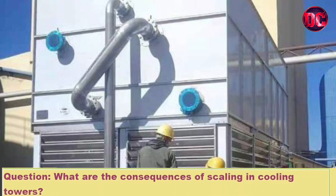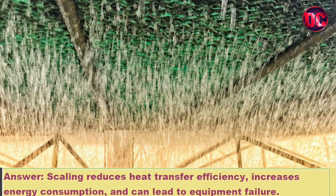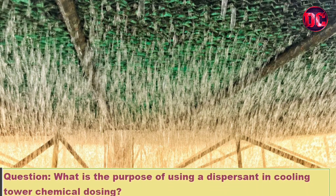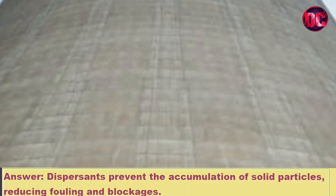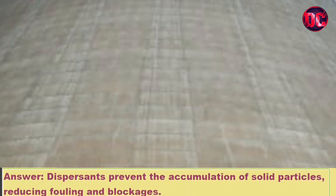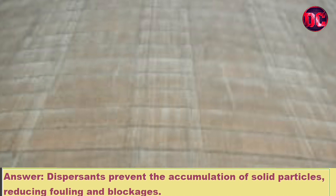Question: What are the consequences of scaling in cooling towers? Answer: Scaling reduces heat transfer efficiency, increases energy consumption, and can lead to equipment failure. Question: What is the purpose of using a dispersant in cooling tower chemical dosing? Answer: Dispersants prevent the accumulation of solid particles, reducing fouling and blockages.